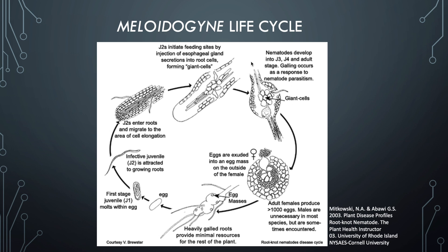The nematodes develop into J3s and J4s and then adult stages, going through several molts. The gall begins to form as a response to the feeding on the giant cells induced by the nematodes. Adult females will produce over 1,000 eggs, and males are unnecessary in most species but sometimes needed depending on the species. The female produces an egg sack to protect her eggs, which she exudes to the outside of the root. These egg masses can be seen on the galled roots. When roots have galls, they provide minimal resources for the rest of the plant, channeling all of the plant's energy into these galls. As the eggs develop, the nematodes hatch and the cycle begins again.